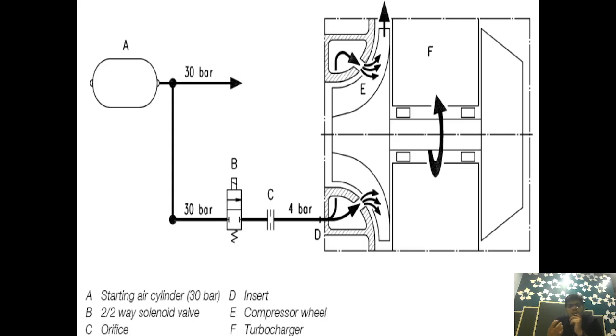How will combustion be proper with this 4 bar air? When built up to rated RPM, the amount of air required will be produced by the compressor. This 4 bar air helps the turbine build up its speed rapidly so it can provide the amount of air required for efficient combustion.